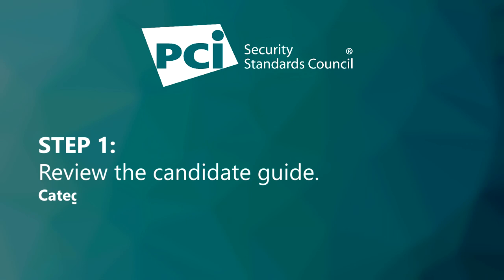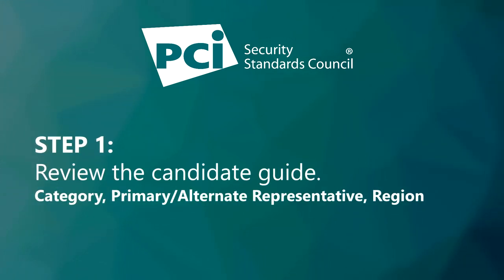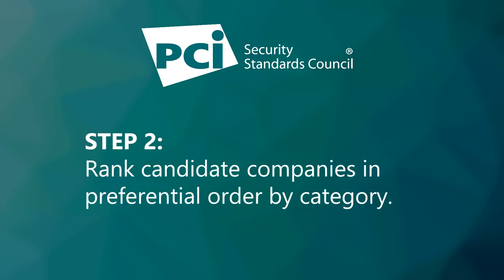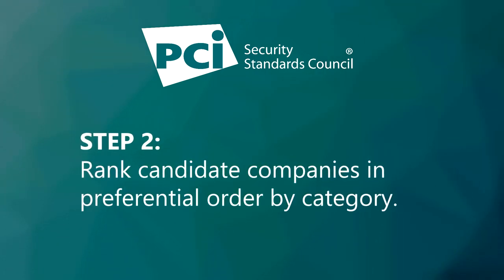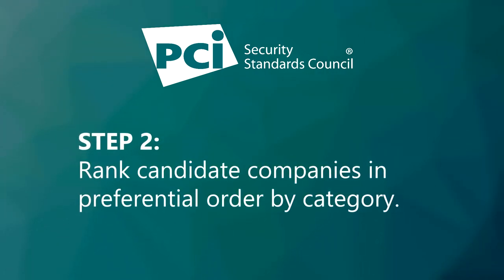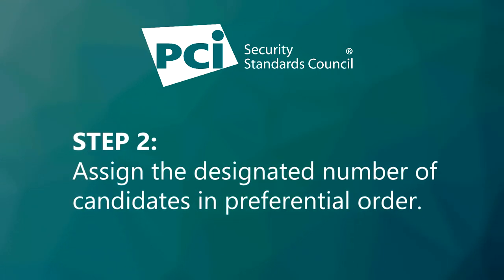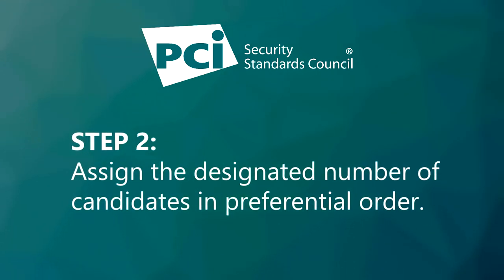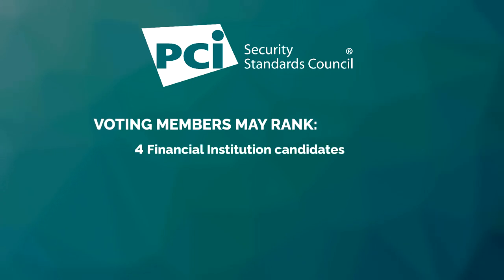Review the candidate guide, which includes the category, primary and alternative representative, and region for each candidate company. Rank candidate companies in preferential order by category, and assign the designated number of candidates in preferential order.